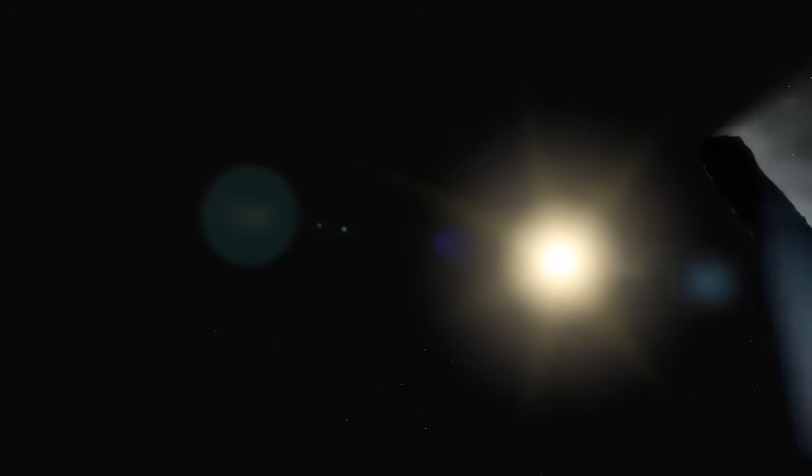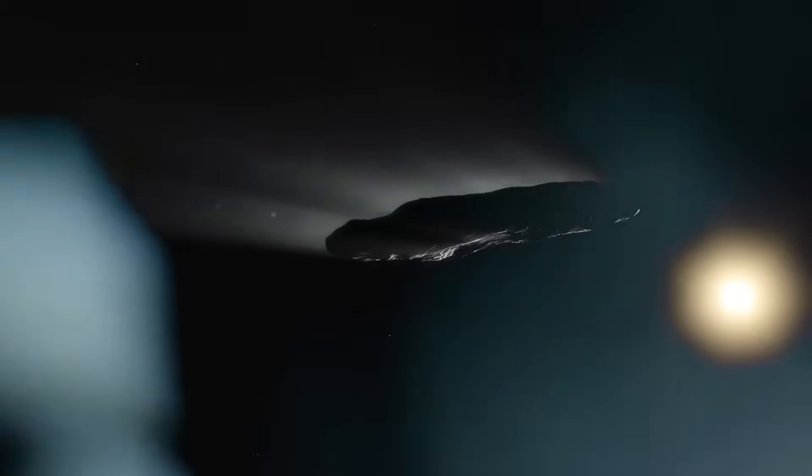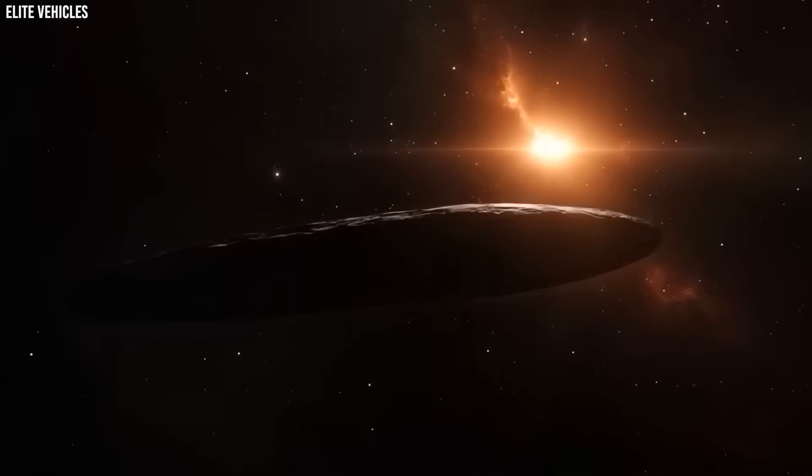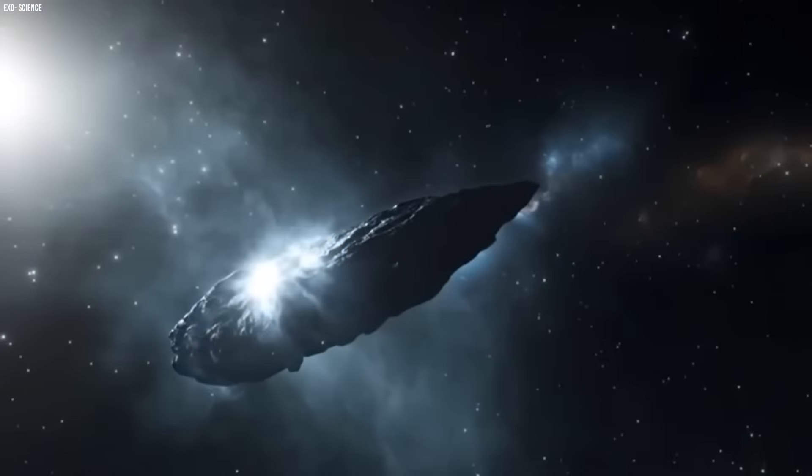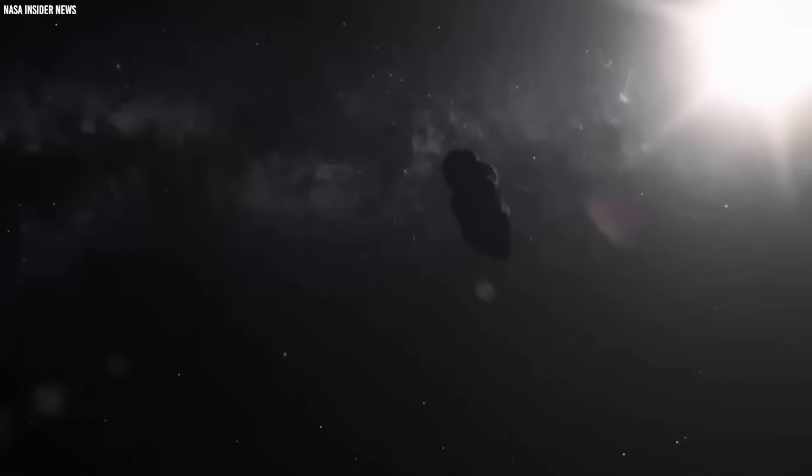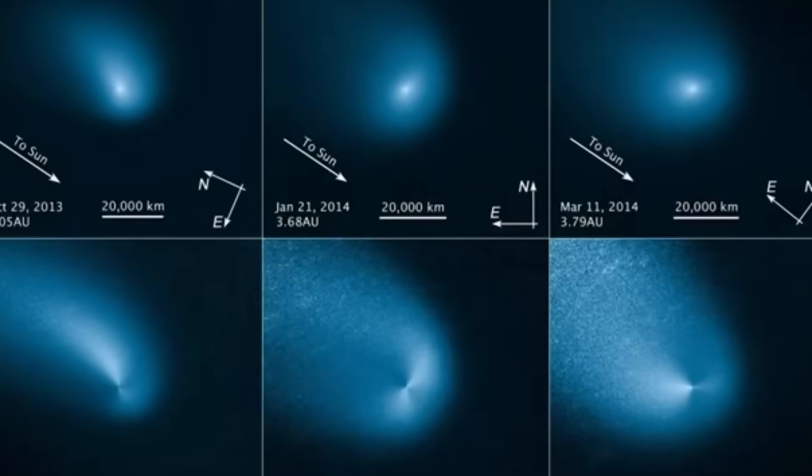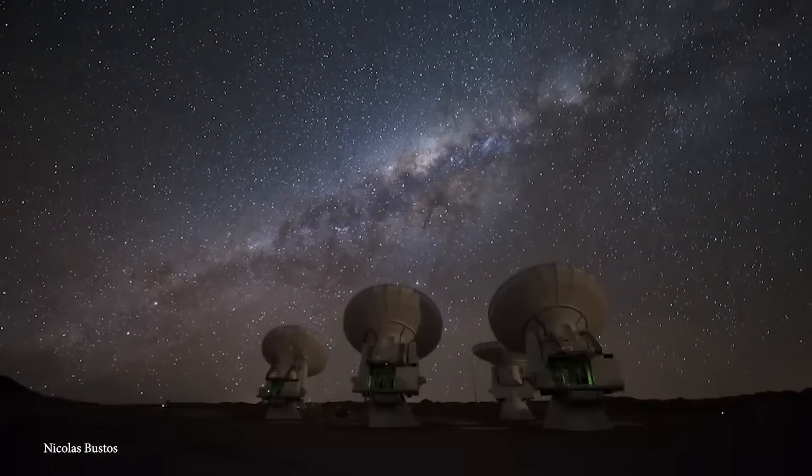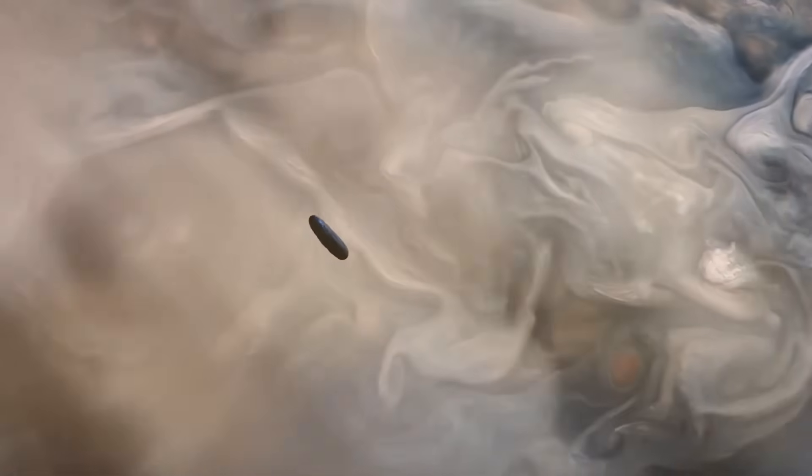If the object is small, it must be losing catastrophic amounts of mass. It is not. If the object is large, it cannot produce the precise acceleration observed. It does. If the coma drives the brightness, it should not follow rotational cycles. It does. If the jet is natural, it must pulse. It does not. If the orbit is purely gravitational, the Jupiter coincidence is absurdly unlikely. It happened anyway.